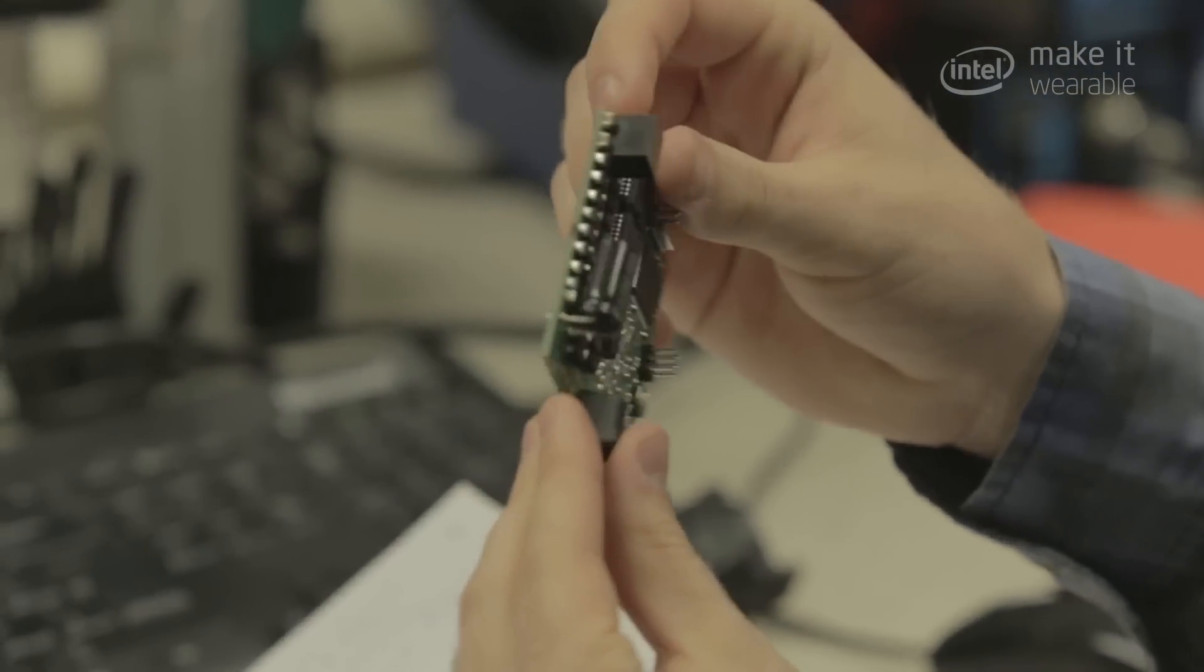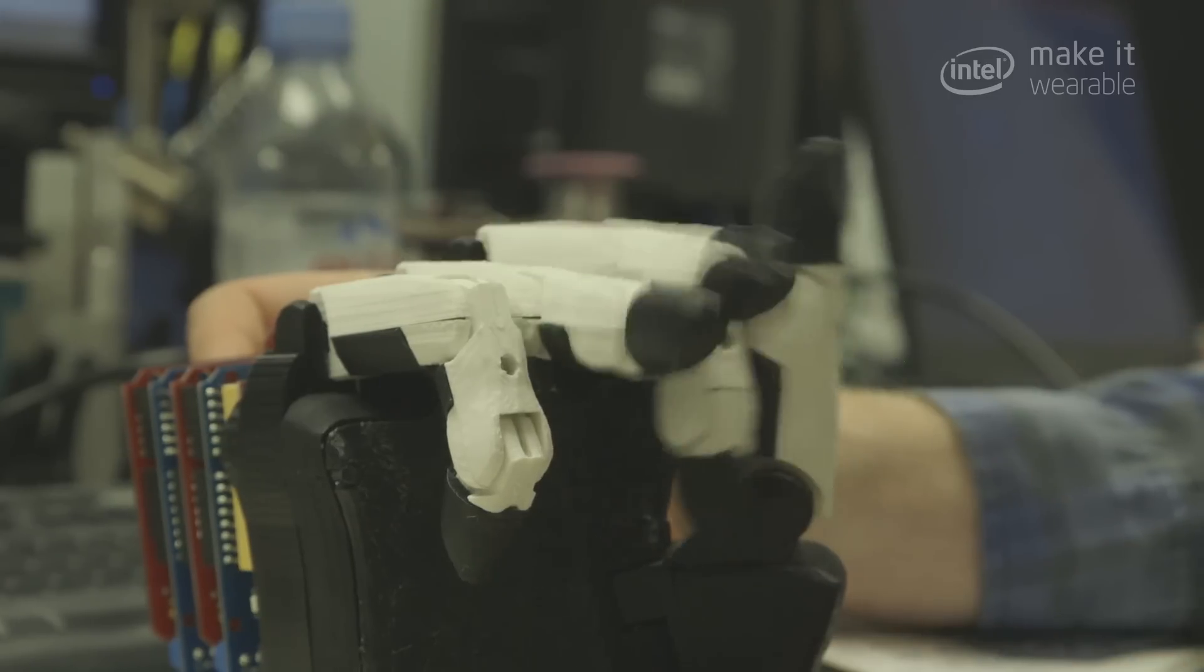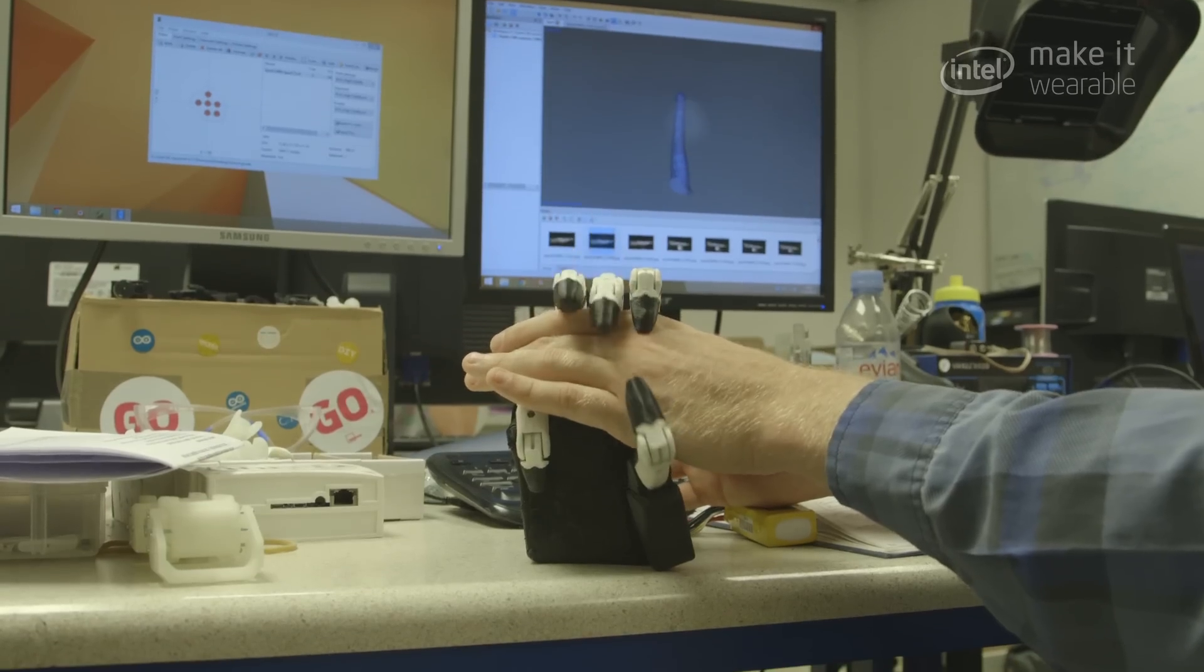This chip is going on to our circuit board and it's going to be used to control the motors of the hand and do some processing on the signals that the amputee inputs.